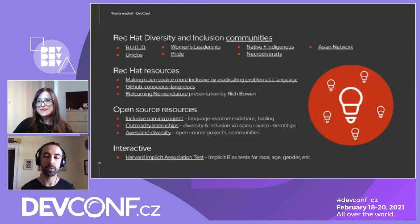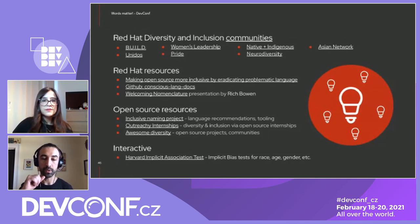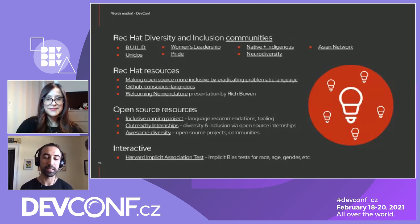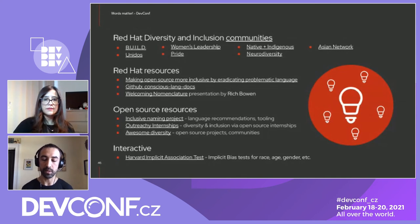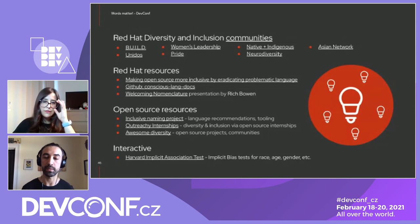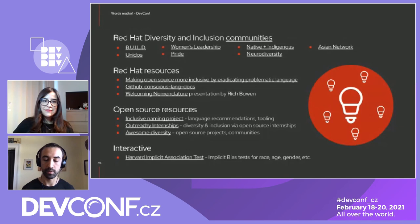Rich Bowen came up with a great presentation called Welcoming Nomenclature that definitely informed a good chunk of this presentation. Also, the Harvard Implicit Association Test is a really amazing thing — you can take an implicit bias test to test for race, age, or gender — lots of different tests to help you recognize some of the implicit biases you have. We recommend taking any implicit tests; they're very constructive.